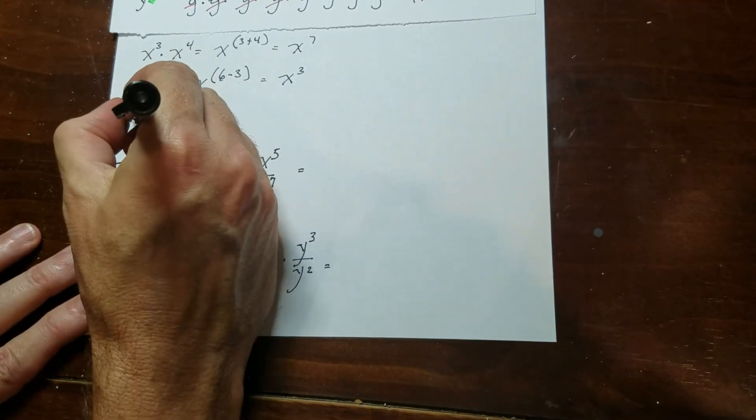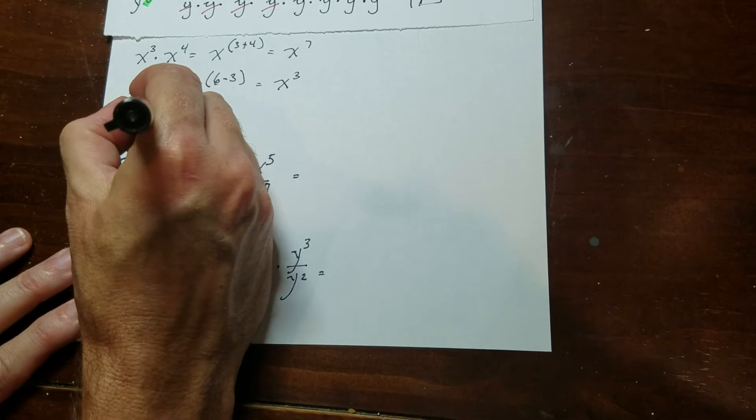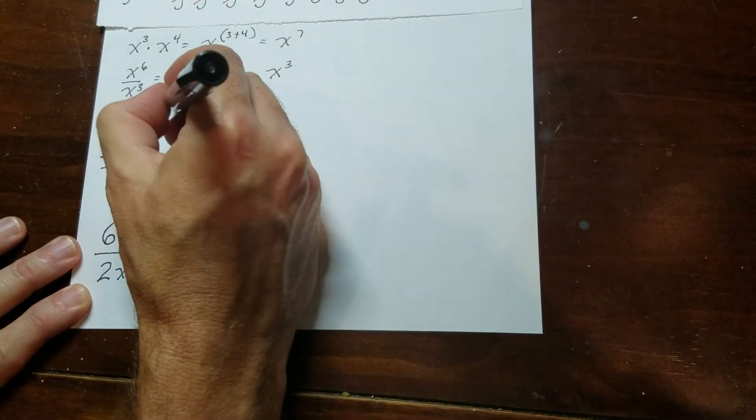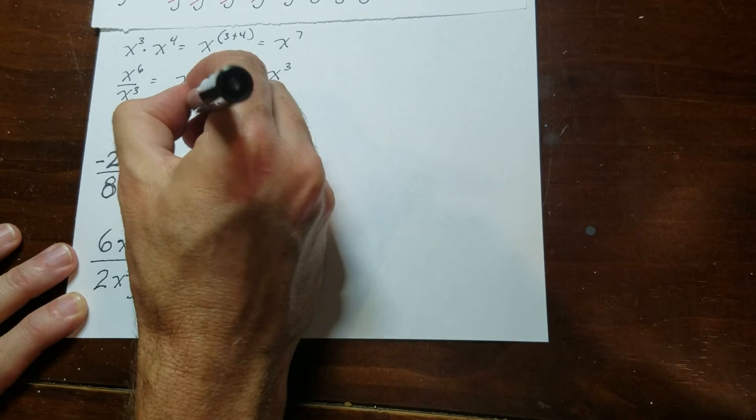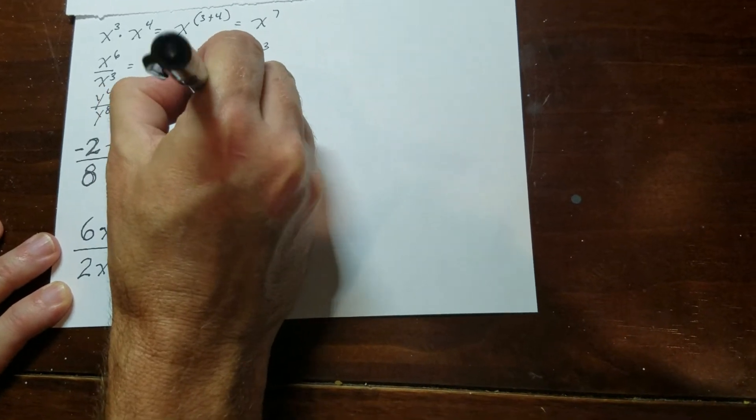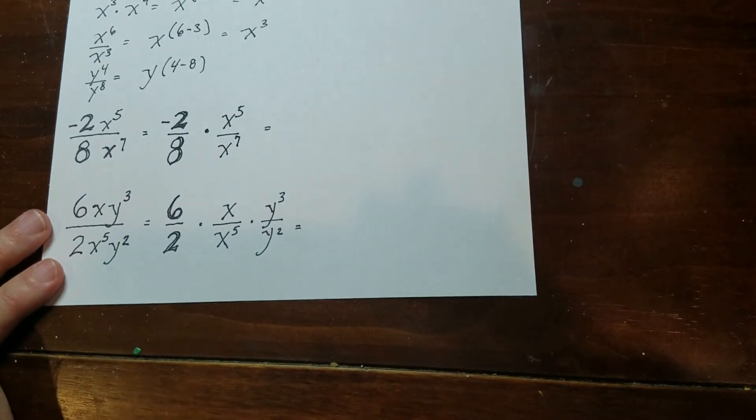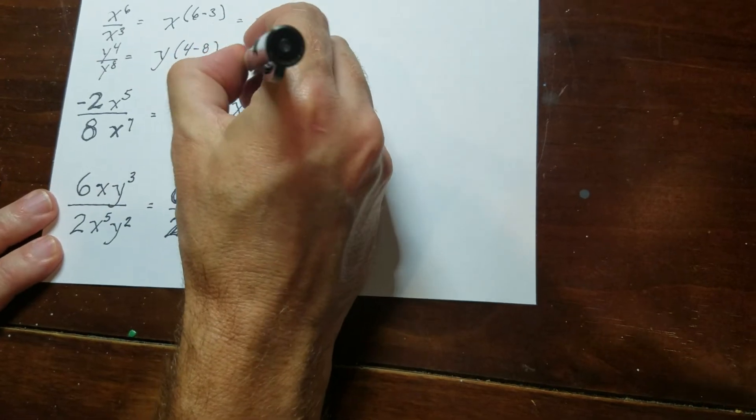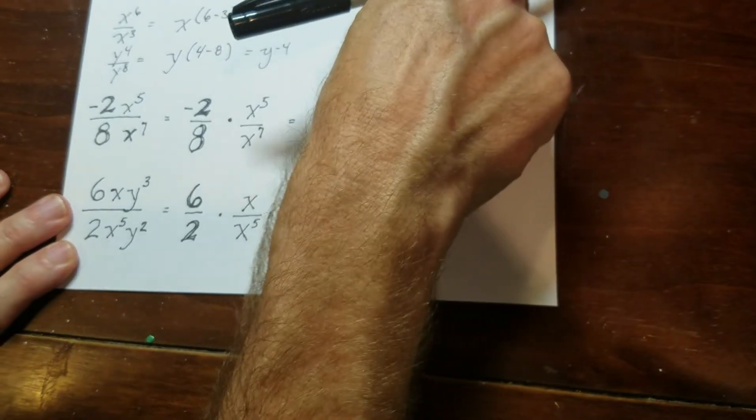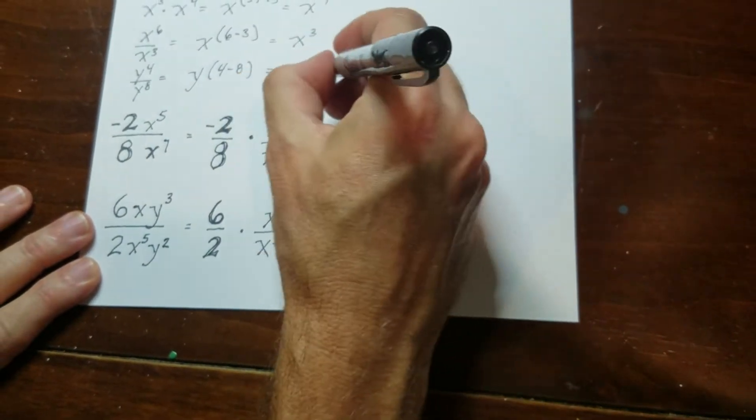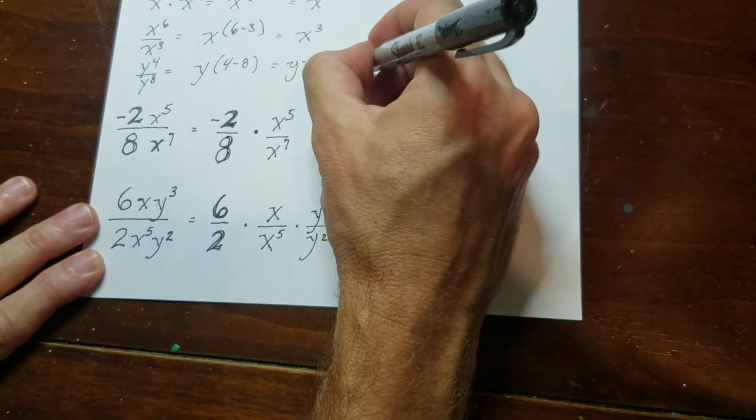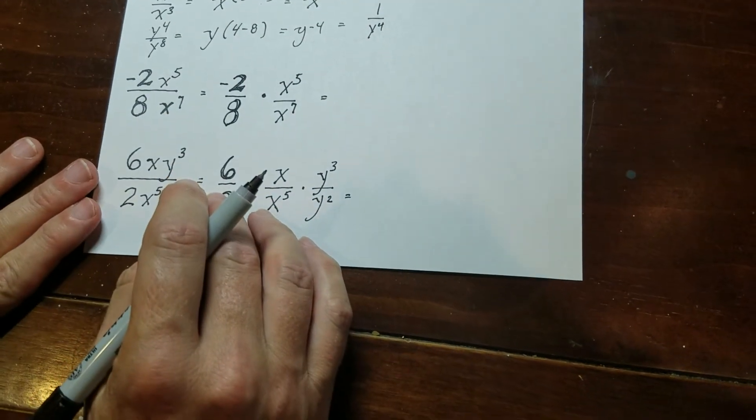This one right here, we got y to the 4th over y to the 8th. That's y to the 4 minus 8. So 4 minus 8 is negative 4. Now, we can't leave it like that, as I said, so what we need to do is we need to move it down to the bottom like that. Okay?